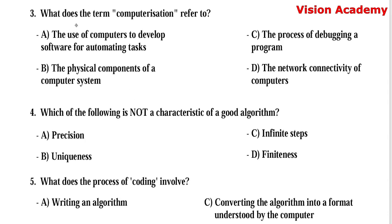Question number 3: What does the term computerization refer to? Option A, the use of computers to develop software for automating tasks. Option B, the physical components of a computer system. Option C, the process of debugging a program. Option D, the network connectivity of computers. Here, option A, the use of computers to develop software for automating tasks, is the right answer.